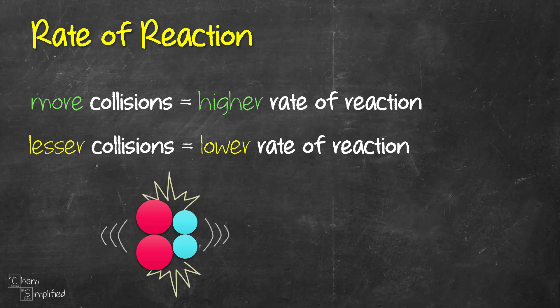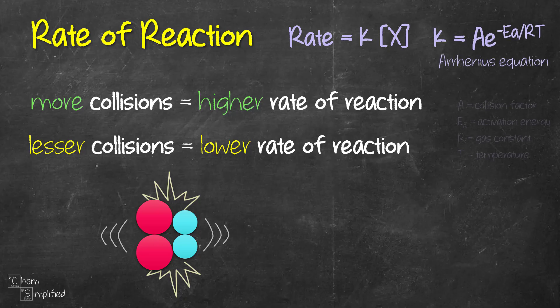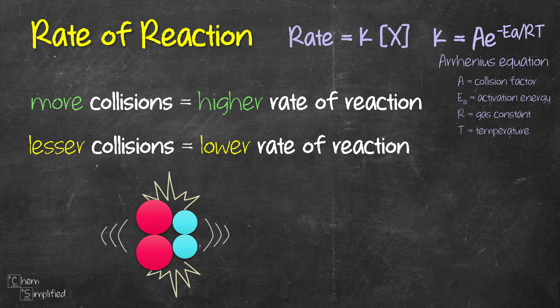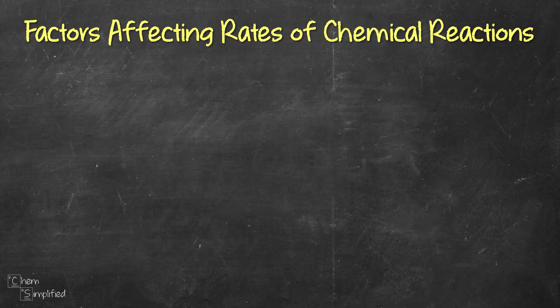Now we can express the rate of reaction in an equation. Here's the equation for the first order reaction where K is the rate constant and equals A times e raised to the negative Ea over RT. This is the Arrhenius equation. Now that we know the basis for a chemical reaction to occur and the relationship between collisions and the rate of reaction, let's move on to the factors affecting rates of chemical reaction.